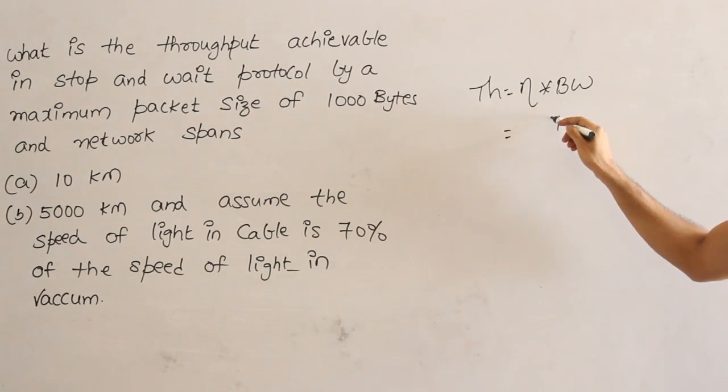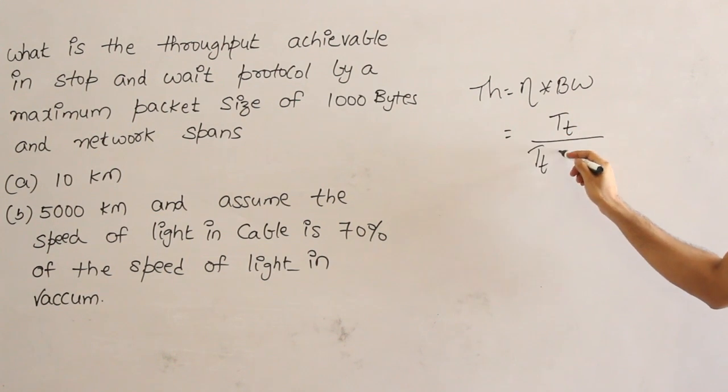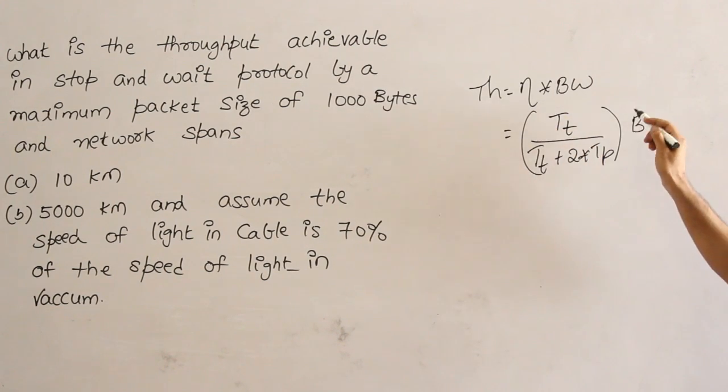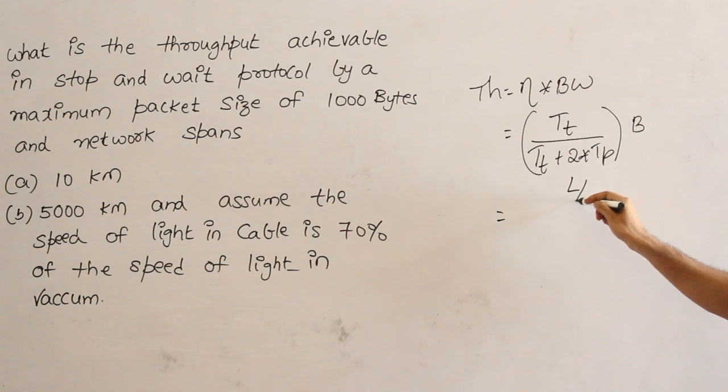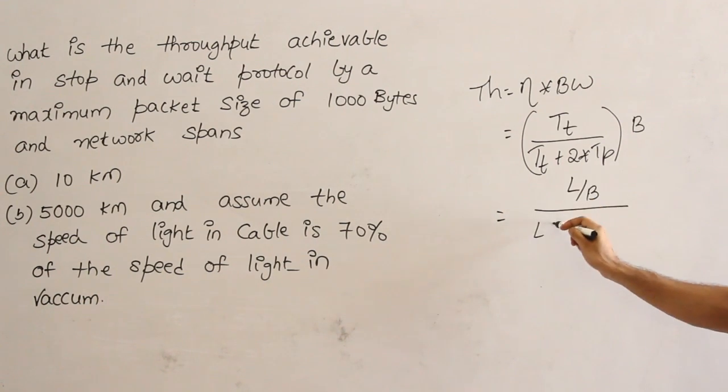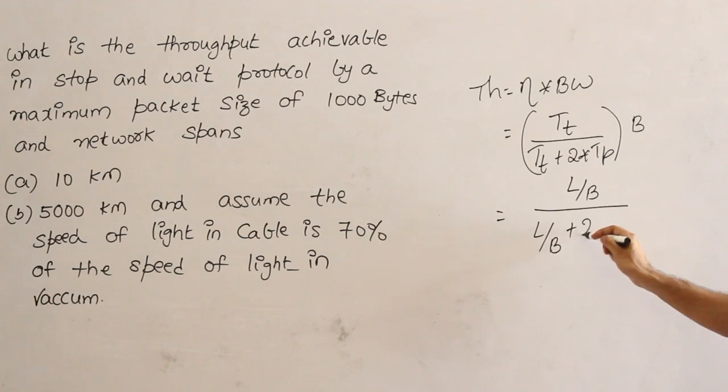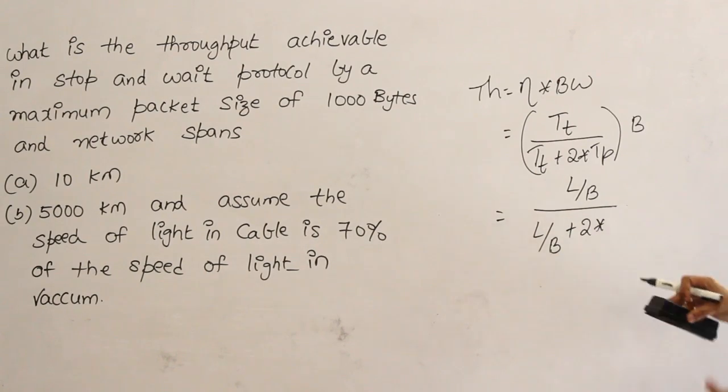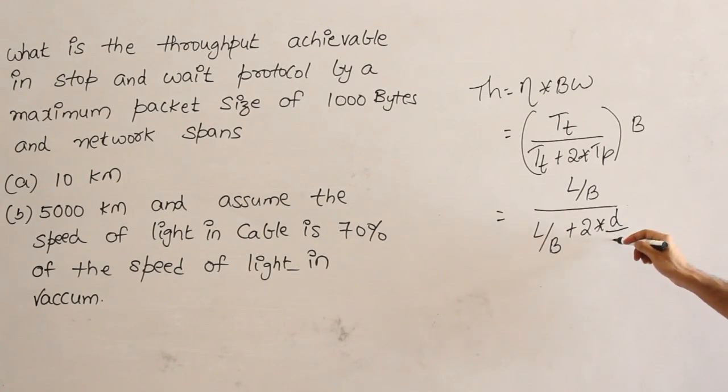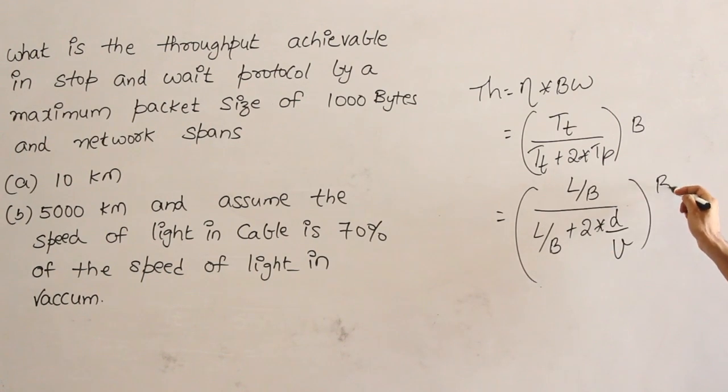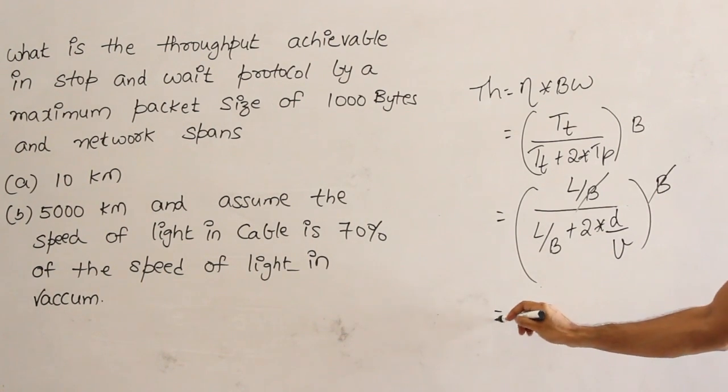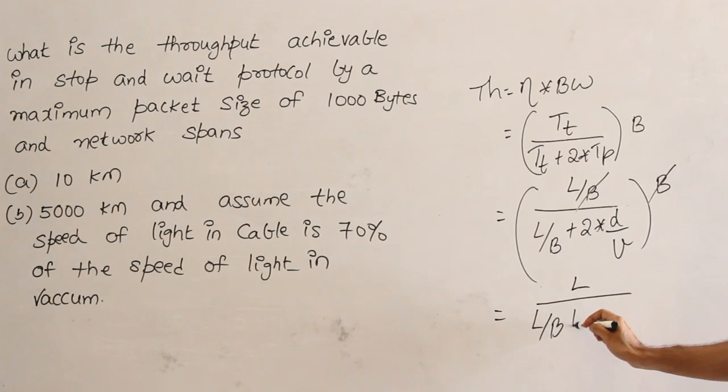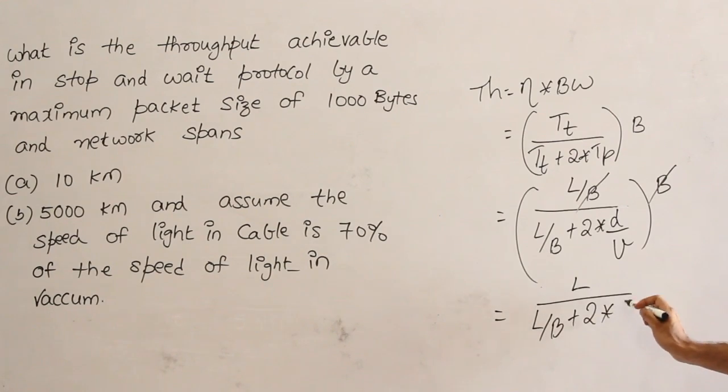It is nothing but efficiency is tt by transmission time plus 2 into propagation delay, into bandwidth. Now what is tt? L by B divided by what is this tt? L by B plus 2 into tp. tp is nothing but d by v, d by v, into B. Therefore this B and this B will cancel out. So what do we get? L upon this is L by B plus 2 into d by v.